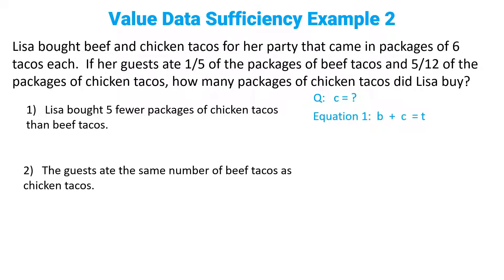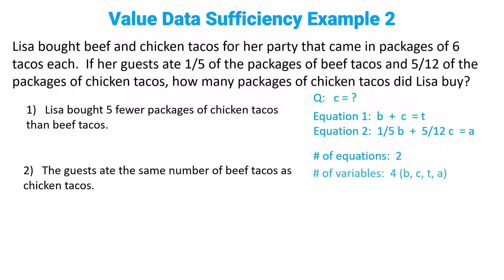The number of beef tacos plus the number of chicken tacos equals the total number of tacos. We're also told that one fifth B — one fifth of the beef tacos — plus five twelfths C — five twelfths of the chicken tacos — equals A, the number of tacos that were eaten. So we've been given two equations in the question, but four variables: B, C, T, and A.